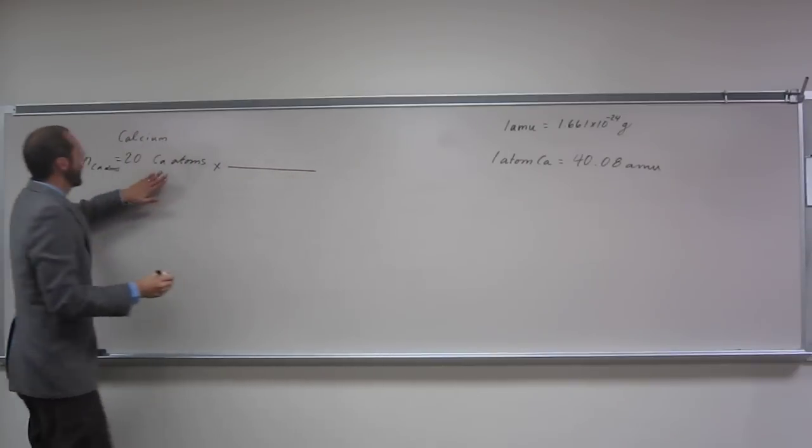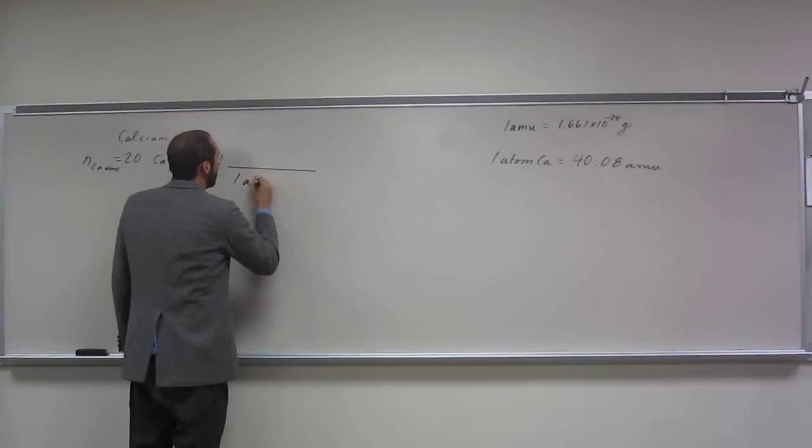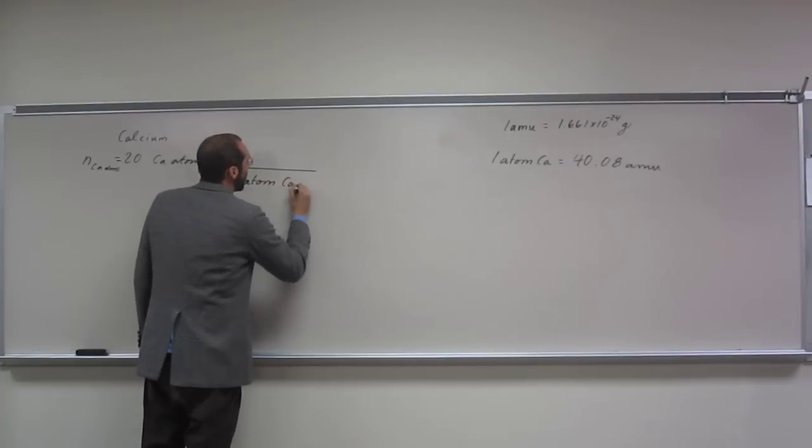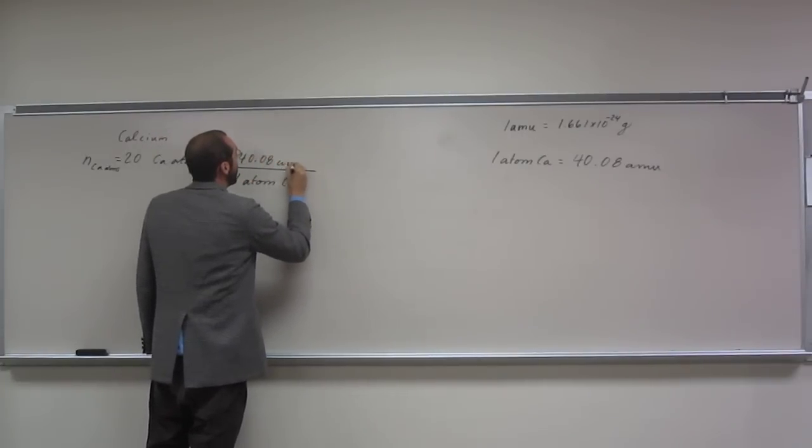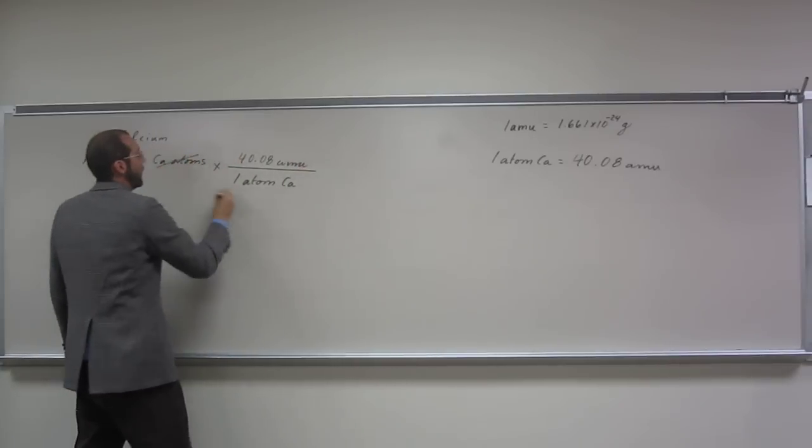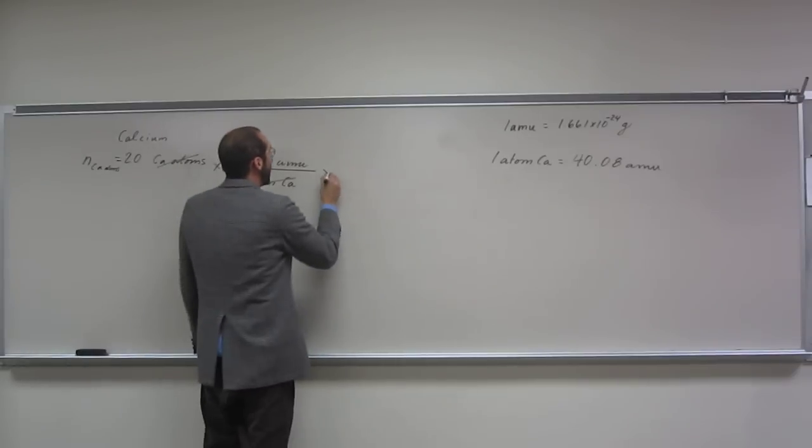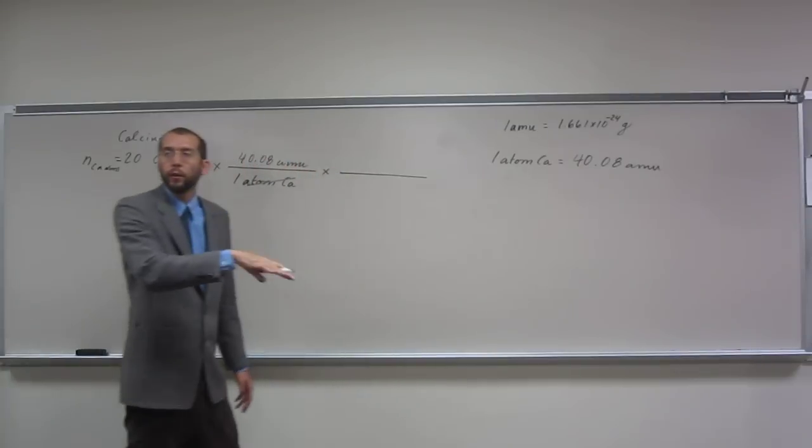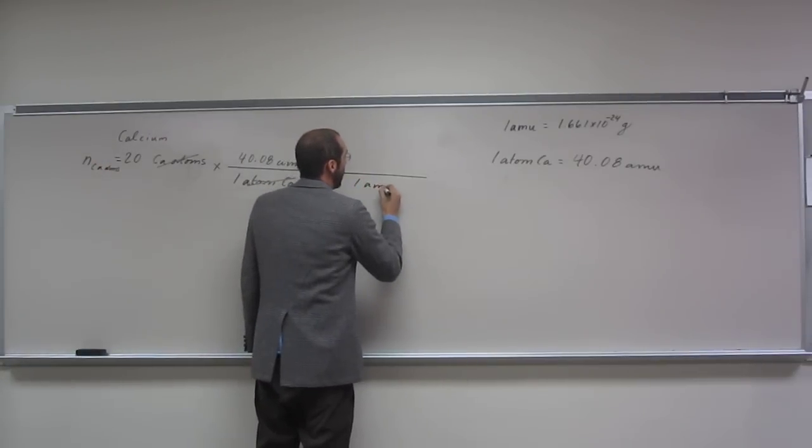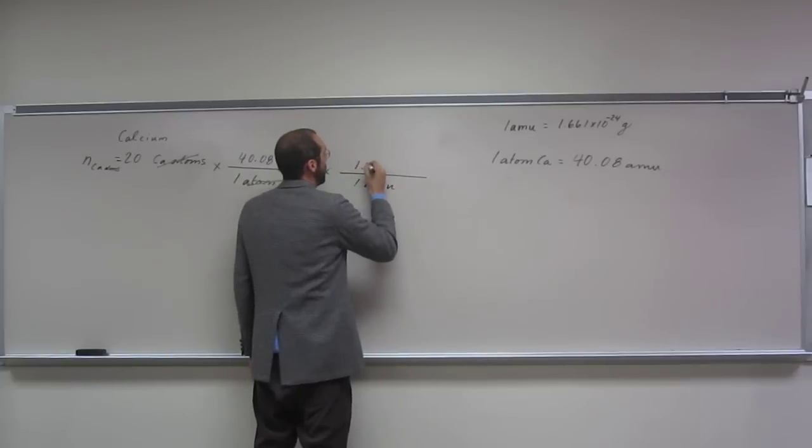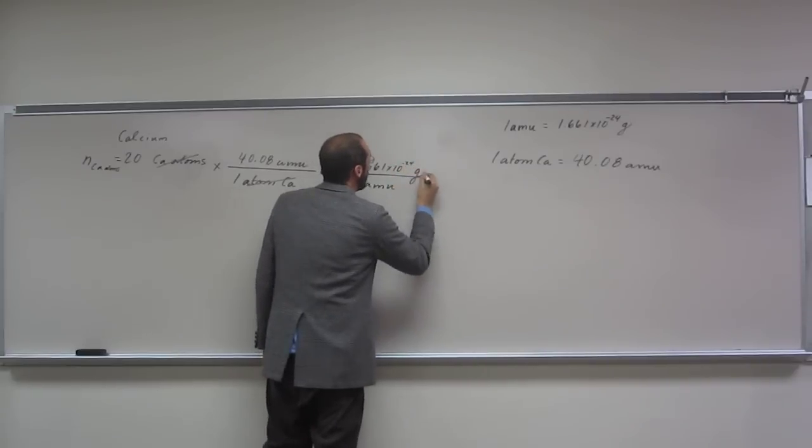Do we have a conversion that goes from atoms to amu? Yes, one atom of calcium is 40.08 amu. And then we do the conversion factor that we used in the problem previous: 1 amu at the bottom, 1.661 times 10 to the negative 24th grams on the top.